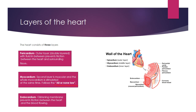Finally we have the endocardium — a glistening membrane on the inside of the heart. Its role is to prevent friction between the heart and the flowing blood, so that blood can flow nice and smoothly through the heart, through the atria, through the ventricles, and to the rest of the body.